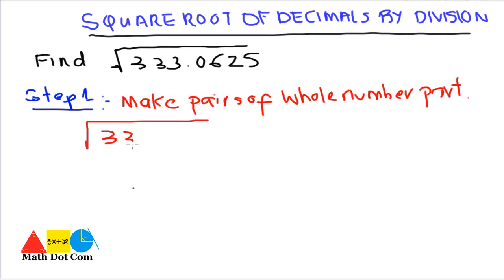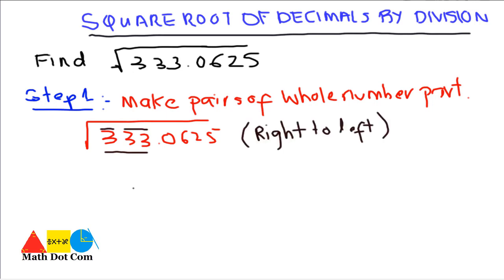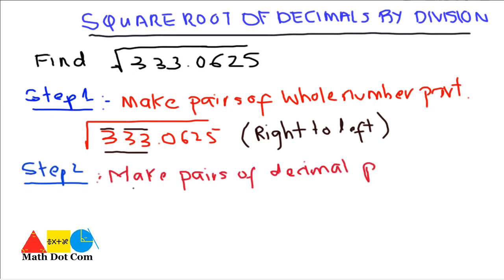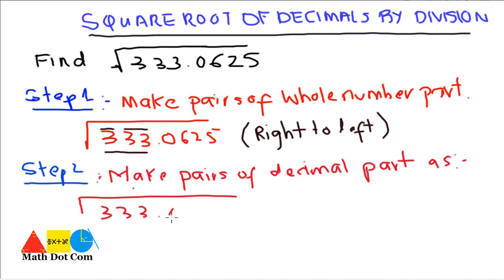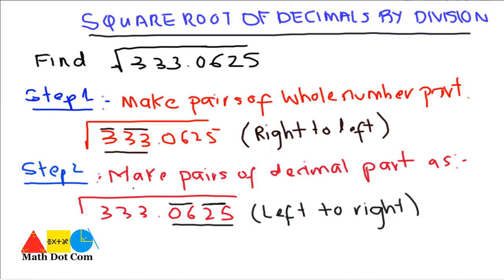For 333.0625, the whole number part is 333, and we have to make pairs from right to left: '33' and '3'. Step 2 is: make pairs of the decimal part. For the decimal part 0625, you make pairs from left to right: '06' and '25'. These are the two steps.